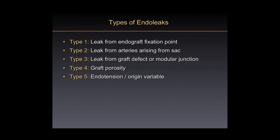Everyone is aware of the basic classification of endoleaks: type 1 from the endograft fixation point, type 2 from arteries arising from the aneurysmal sac, type 3 from a graft defect or modular junction — which has become less common as devices have improved — type 4 is graft porosity, and type 5 is a little bit of an enigma, which I'll talk about at the end of this lecture.